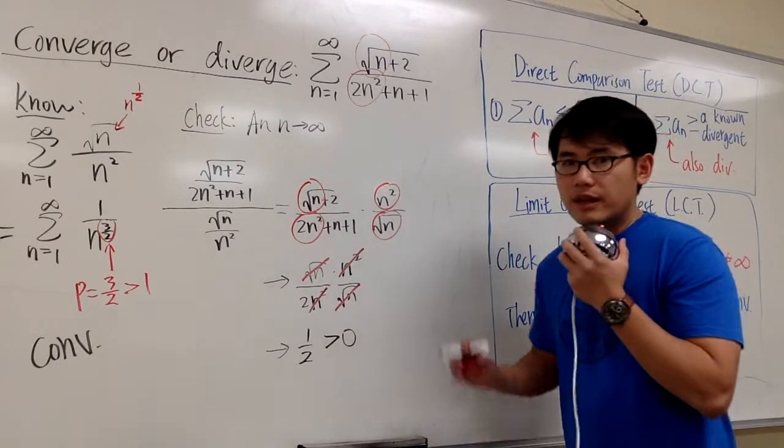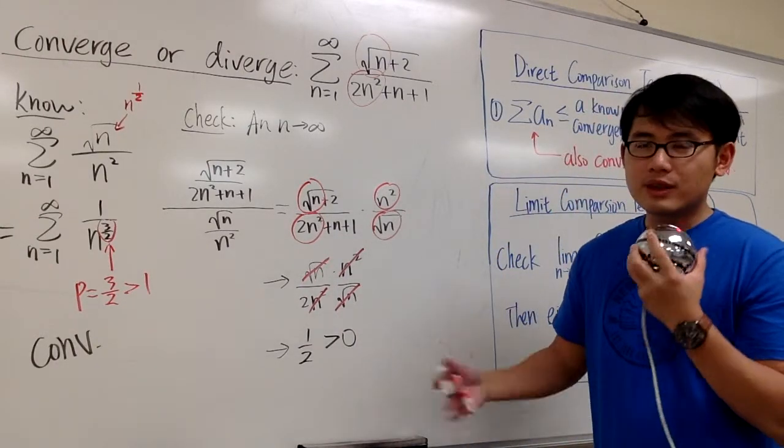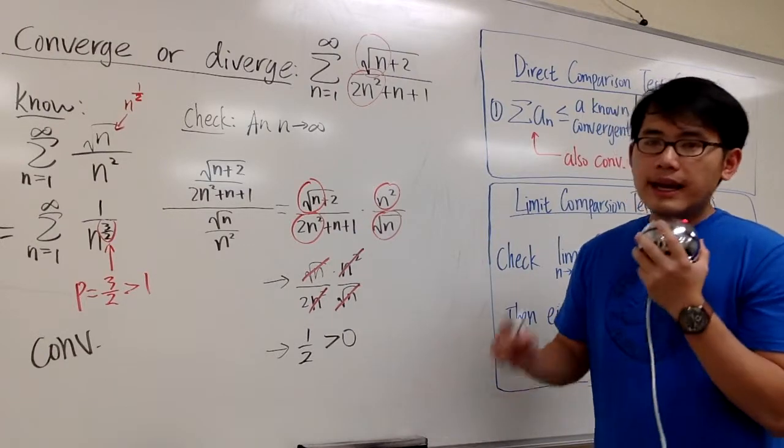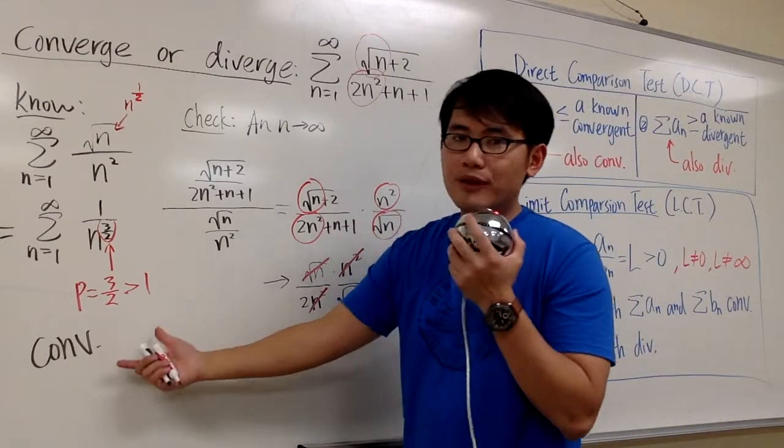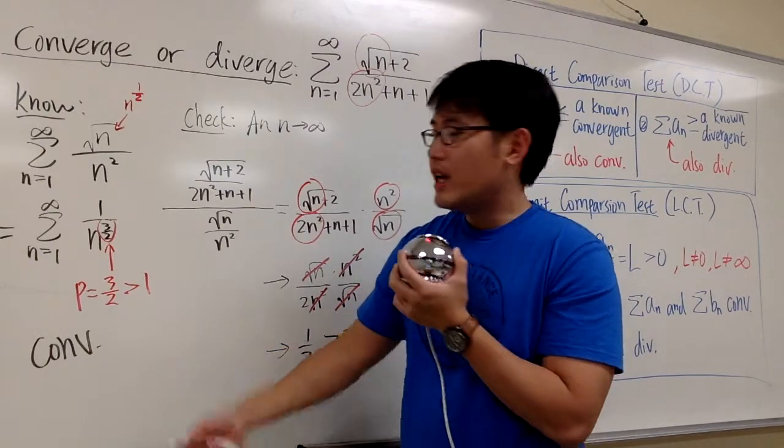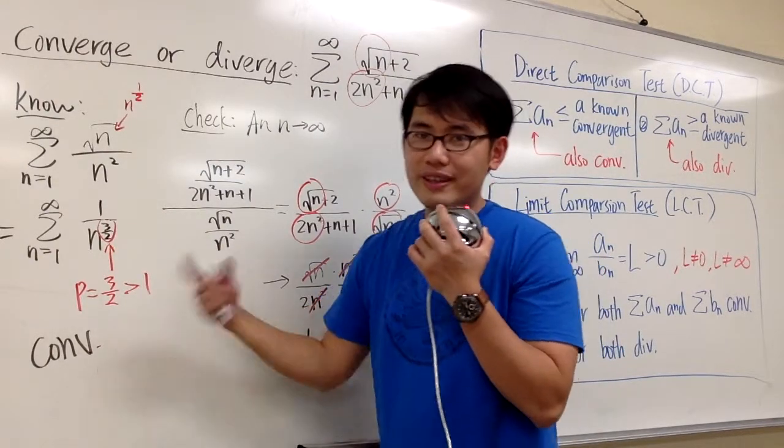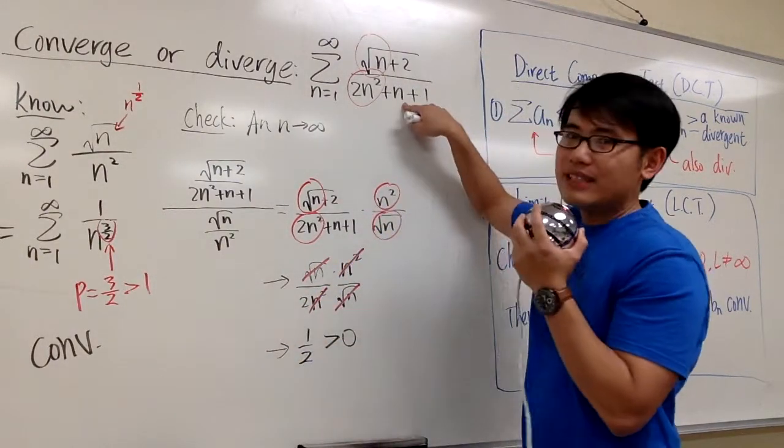Therefore, the limit comparison test works. We get to draw a conclusion. And the conclusion is, this and that, either they both converge or they both diverge. We know this already converges. Therefore, this has to converge as well.